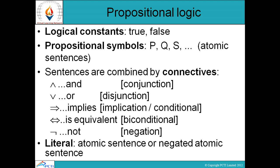Let us discuss propositional logic. So logical constants — सबसे पहले जब भी हम propositional logic की बात करते हैं, वहाँ पर हम truth values की बात करते हैं। That means कोई भी logical statement की truth value हम decide करेंगे — either it can be true or false. किसी भी statement के लिए हम दो truth values assign कर सकते हैं: या true होगा या false होगा। Now we use some symbols for the propositions — propositional symbols — और हम capital letters का use करते हैं, like P, Q, S and so on. कोई भी letter use कर सकते हो किसी भी proposition को represent करने के लिए।